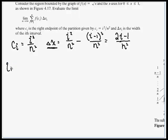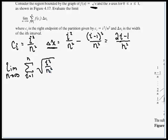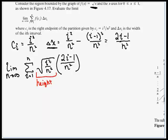We're going to look at this again. It's a limit as n goes to infinity of the summation from i equals 1 to n of f of c sub i times delta x. Our function was the square root of x, so it's going to be the square root of i squared over n squared, multiplied by the width, 2i minus 1 over n squared. This part is the height of each rectangle — we plug that value into the function to see how high up the y-axis we go — and this next part is the width, delta x. Height times width gives the area of the rectangles.